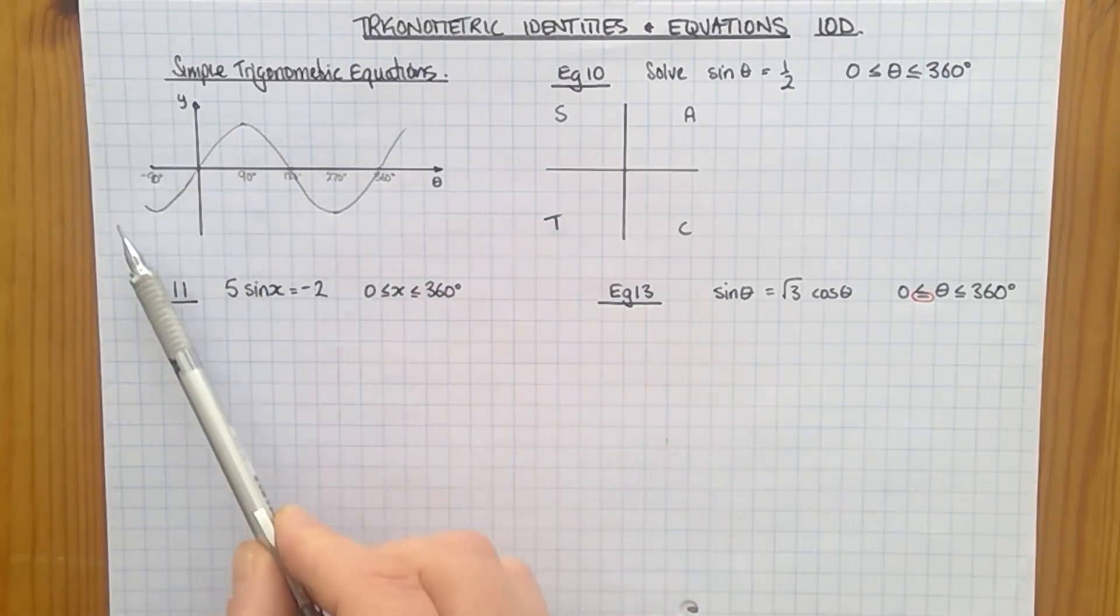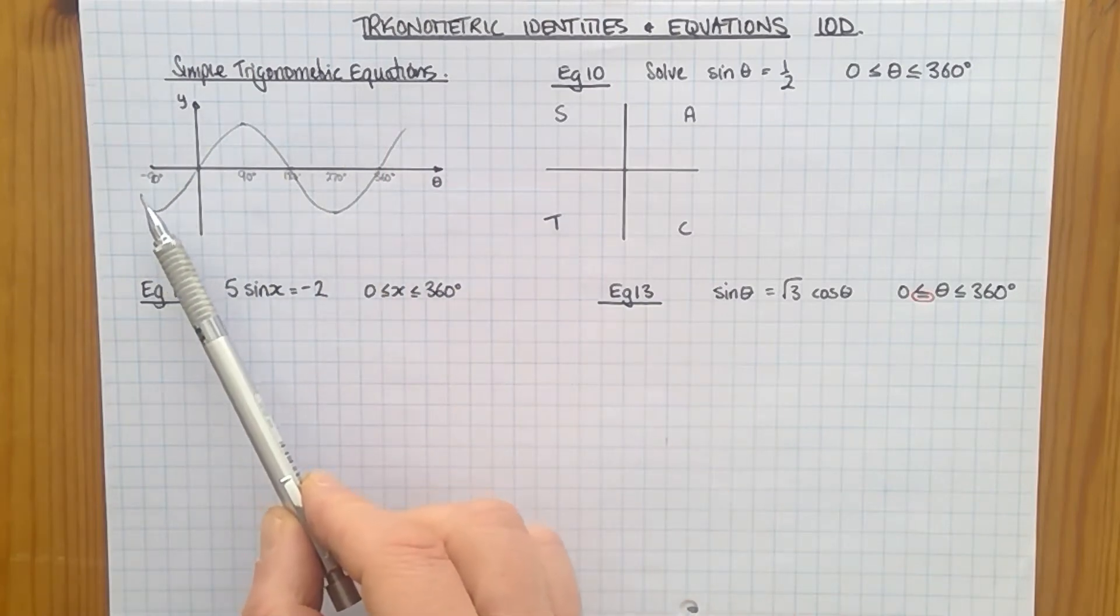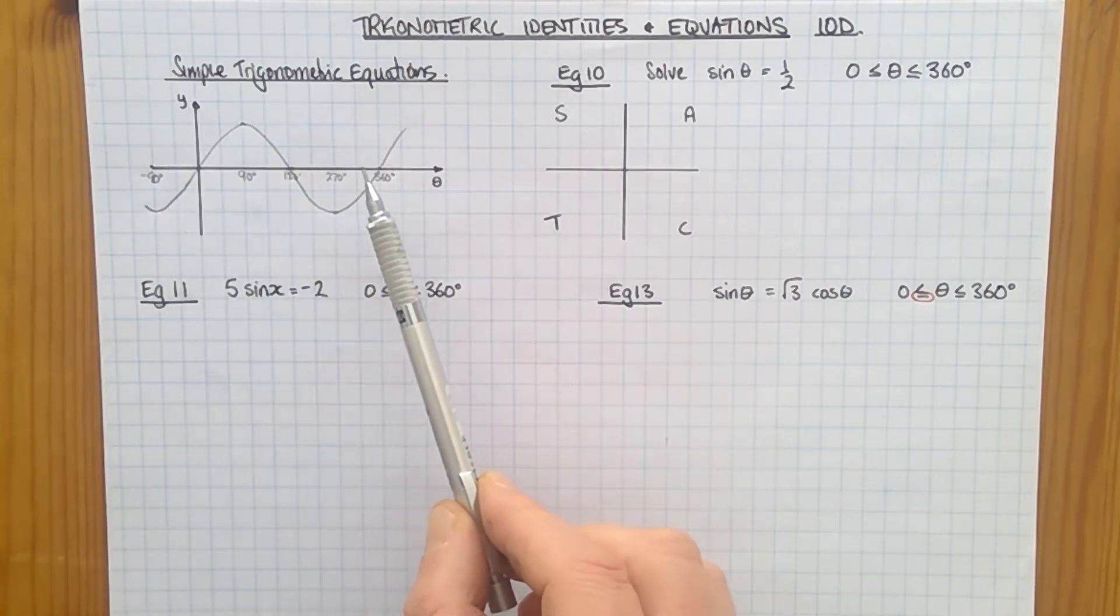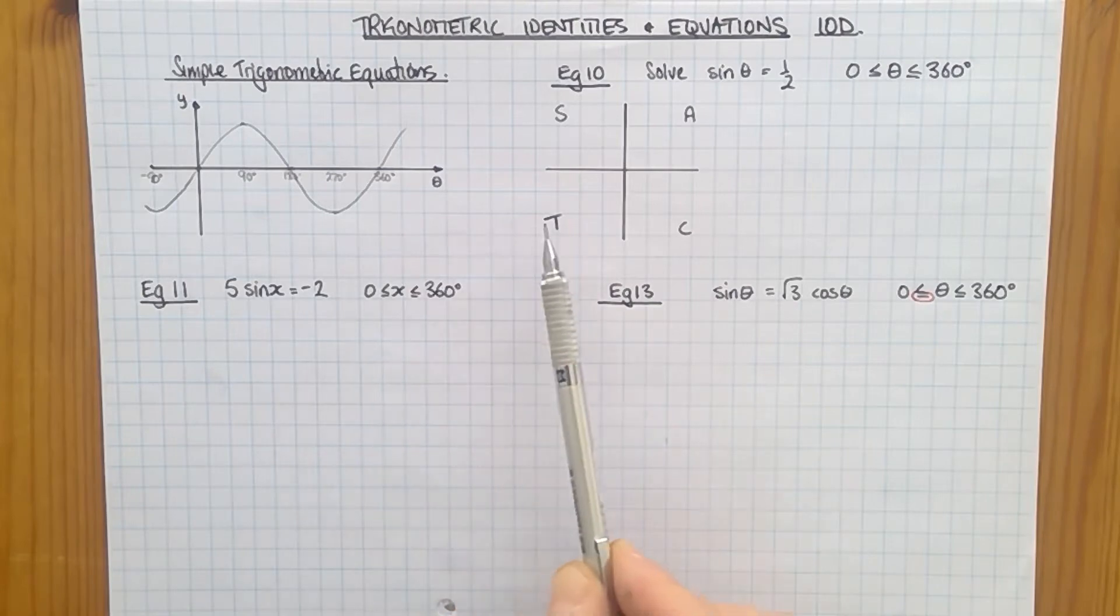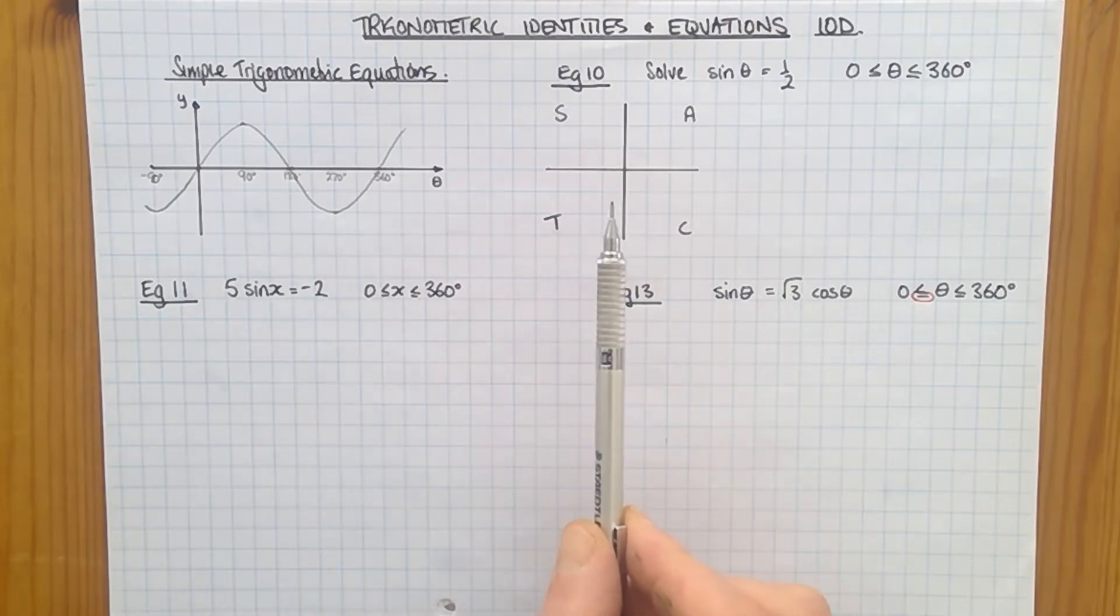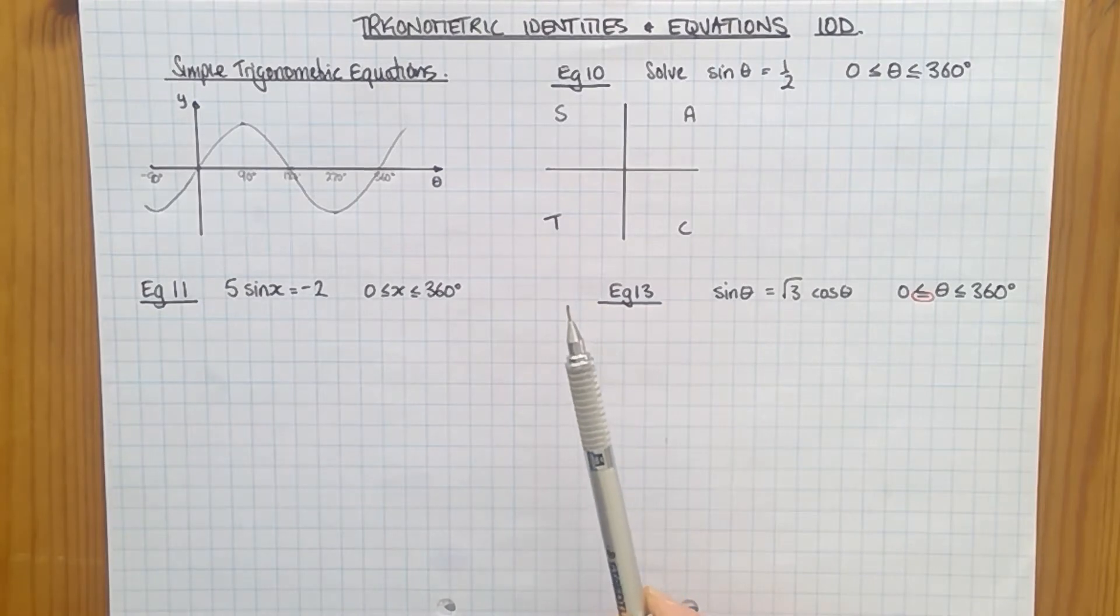To help us, I've got a graph here of sine theta going from minus 90 up to around about 360. I've also got a CAST diagram. Different students prefer different ways. So I'm going to show you both for the first one and the second one. Thereafter, I will go with CAST diagrams.